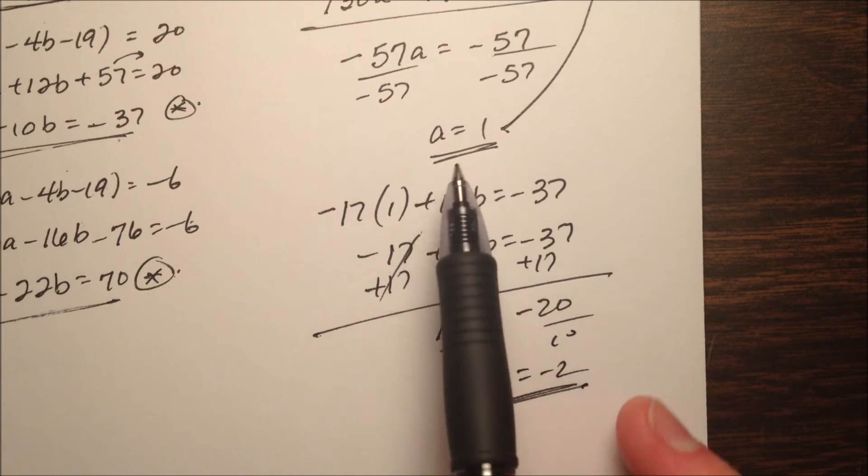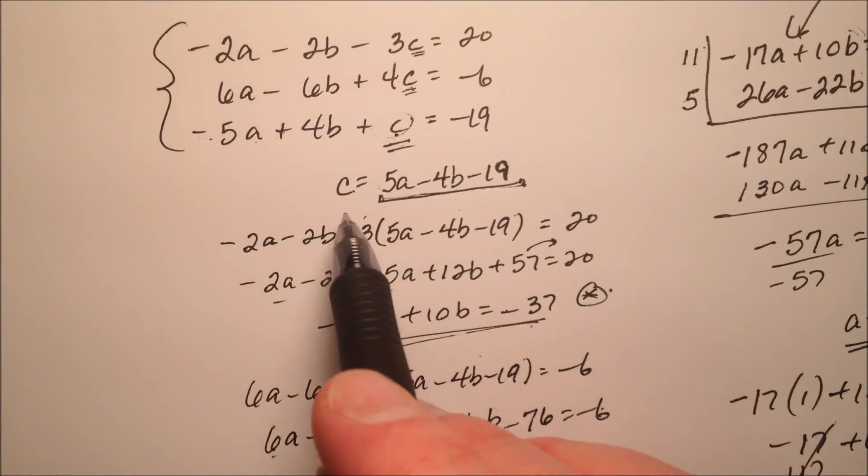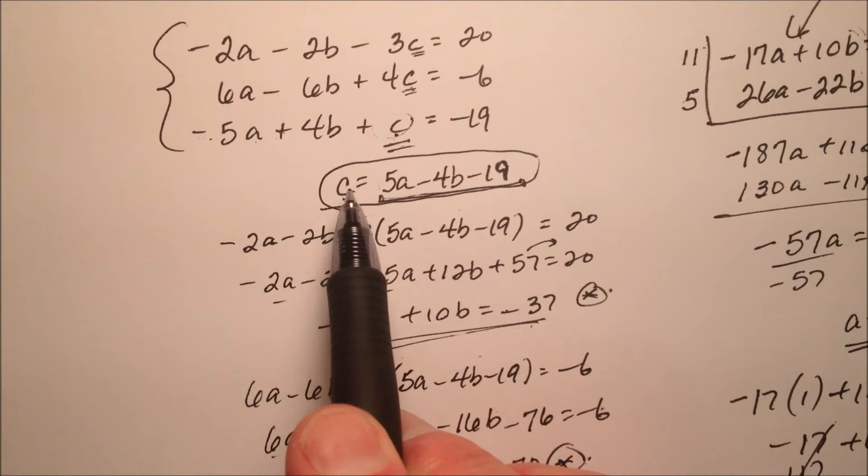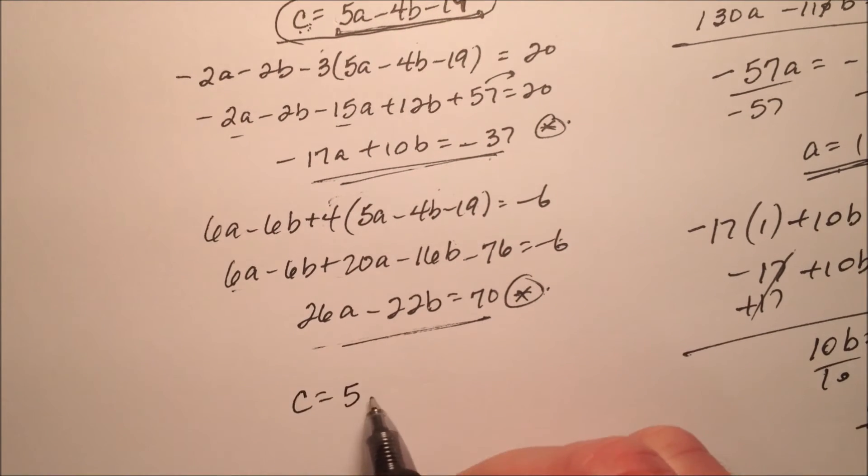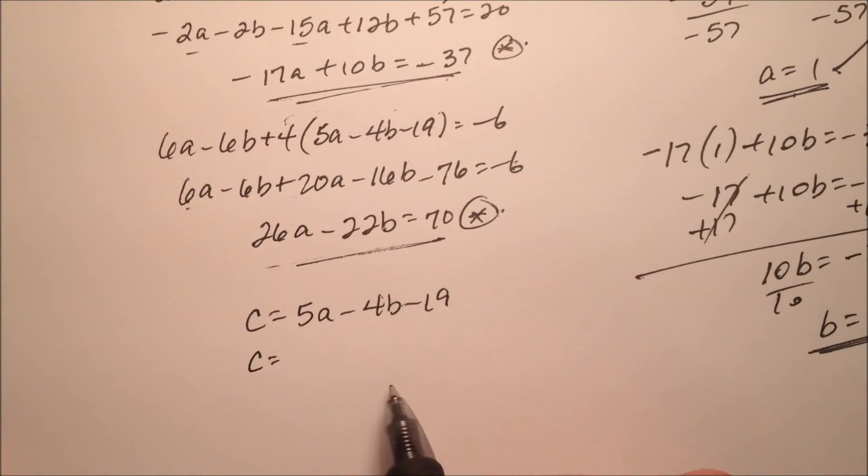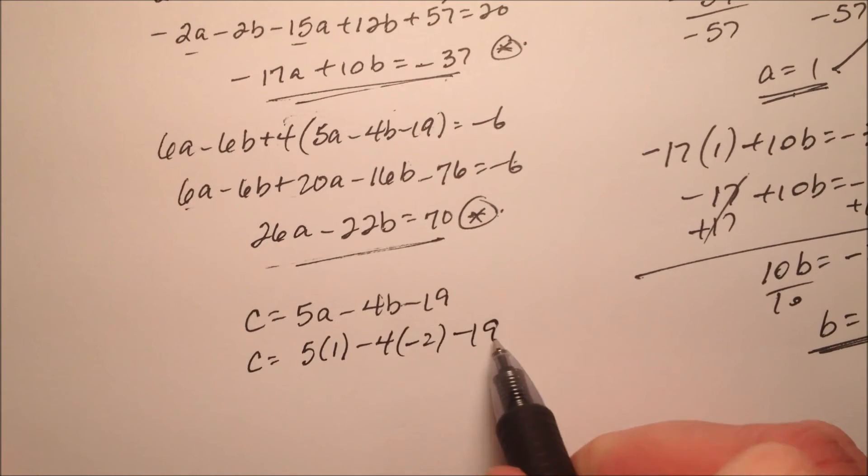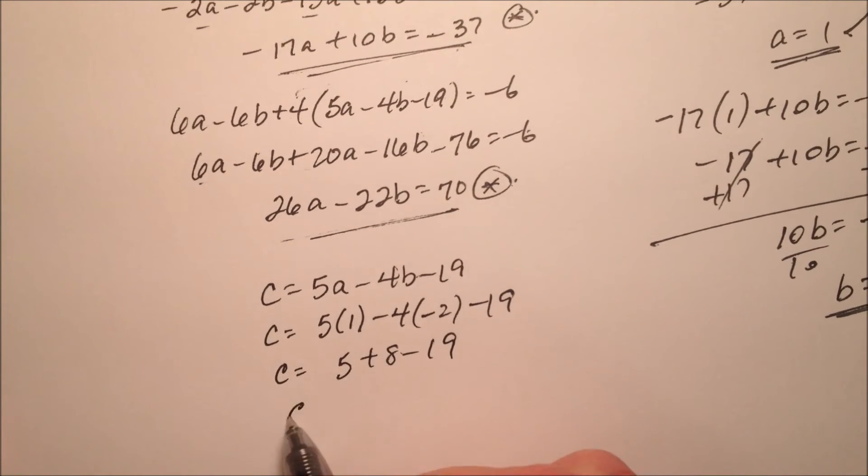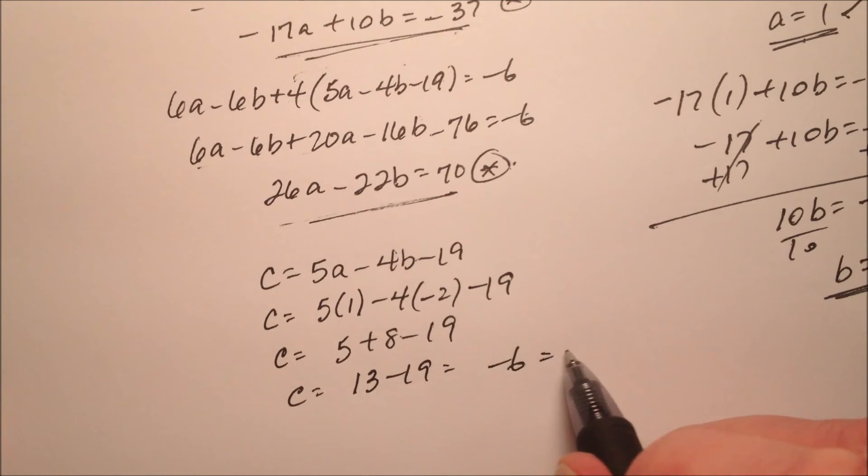Well, that's not too bad. So I have a as 1, and b as negative 2. So let's go ahead and plug it back into this expression here, because it has already been solved for c, so we don't have to do the work again of getting c by itself. So c equaled 5a minus 4b minus 19. Well, a was 1, and b was negative 2. So let's go ahead and simplify this. 5 plus 8 minus 19. That's going to work out to be 13 minus 19, which is negative 6.